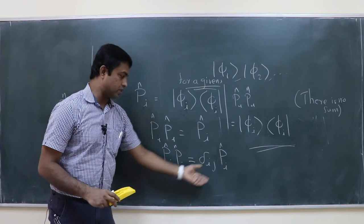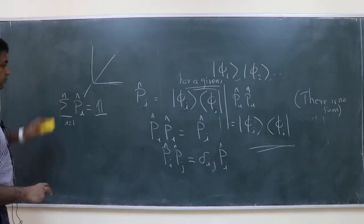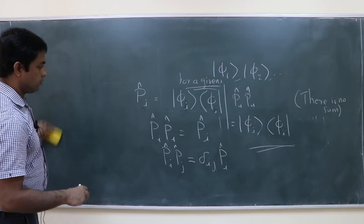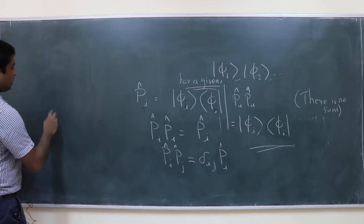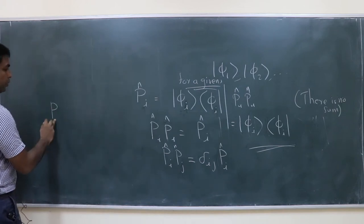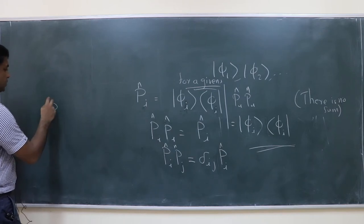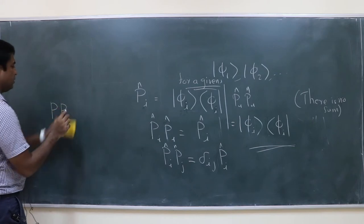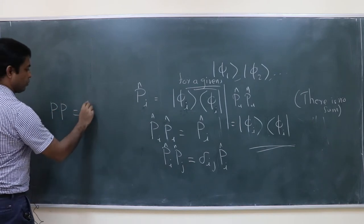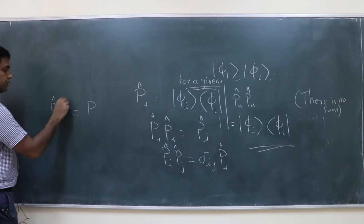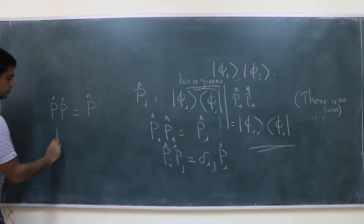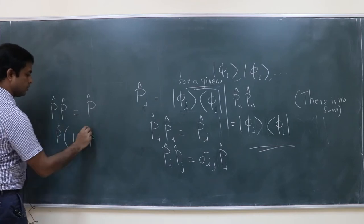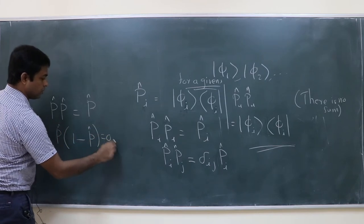There is no summation convention here — please understand that. So writing it without the index i to avoid confusion: P squared, or P times P, equals P. These are all projection operators. That means P times (1 − P) equals zero.